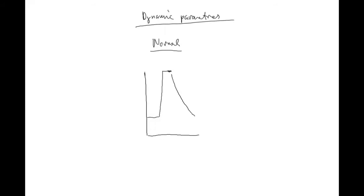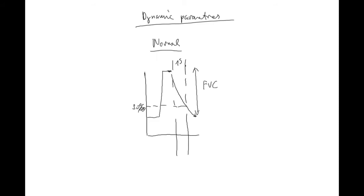In one second - if this is one second here - with healthy lungs you should be able to breathe out about 80 percent of all the air you're able to blow out, which you can call the forced vital capacity, or FVC. So the ratio FEV1 to FVC should give you around 80 percent.